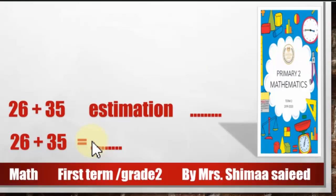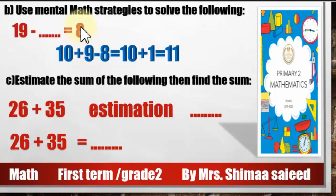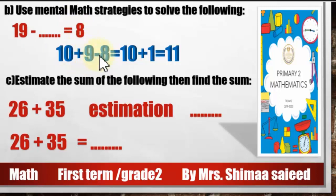Or we can count up from 8 to 15 — we count 7 numbers. Next: 19 minus unknown equals 8. Since 19 equals 10 plus 9, and 9 minus 8 equals 1, then 1 plus 10 equals 11. So 19 minus 11 equals 8.